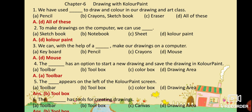MCQ No. 3: We can with the help of a dash make our drawings on a computer. Option A: Keyboard. Option B: Pencil. Option C: Crayons. Option D: Mouse. Your answer is Option D: Mouse. We can with the help of a mouse make our drawings on a computer.